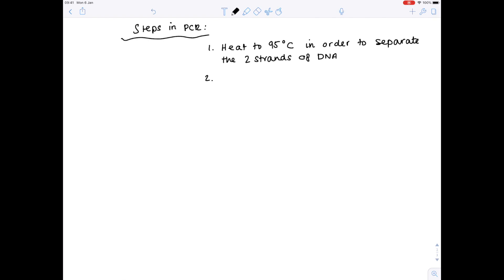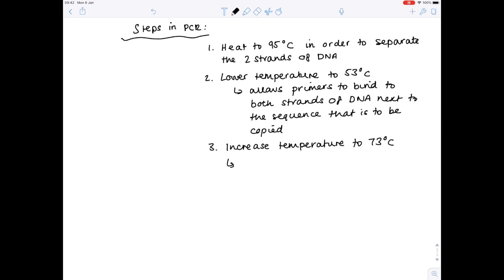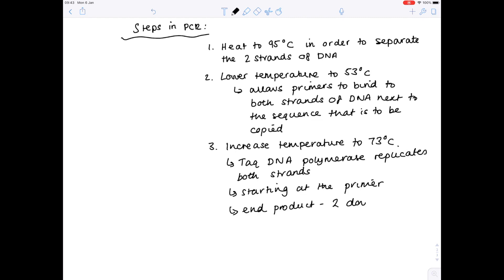The next step is to lower the temperature to around 53 degrees Celsius and then what happens is the primers can bind to both strands of the DNA next to the sequence which we're trying to copy. And then we increase the temperature in the third step to 73 degrees. And what happens now is the important step when the TAC DNA polymerase replicates both strands. Crucially it starts at the primer and your end product is two double-stranded copies of the original DNA.